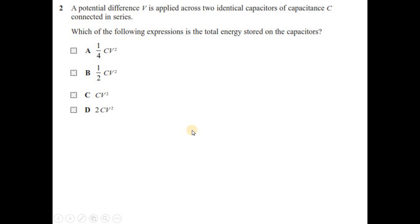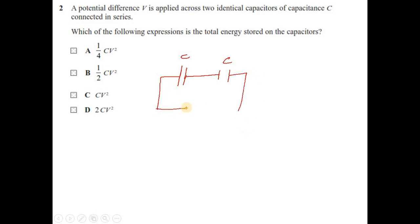Question 2: a potential difference V is applied across two identical capacitors of capacitance C connected in series. Which expression gives the total energy stored? With two capacitors in series, both with capacitance C, the supply voltage V is divided equally between them, so the voltage across each capacitor is V/2.